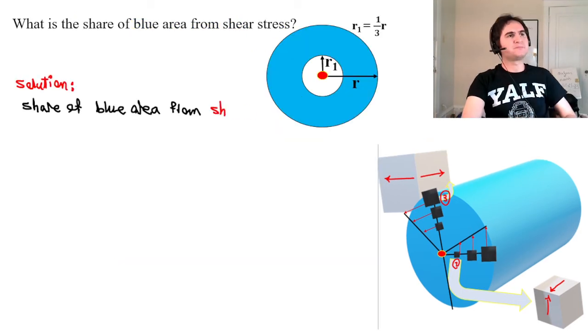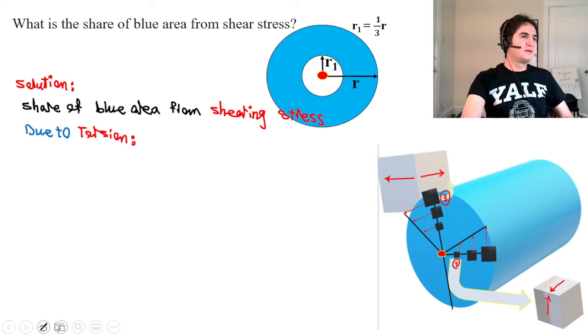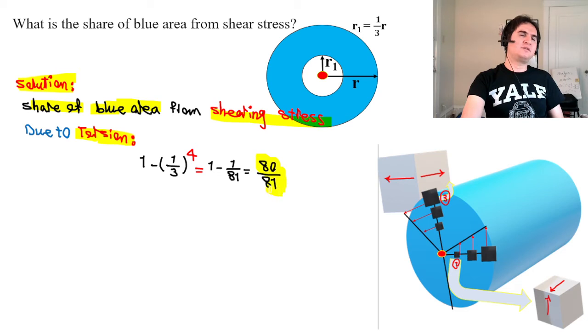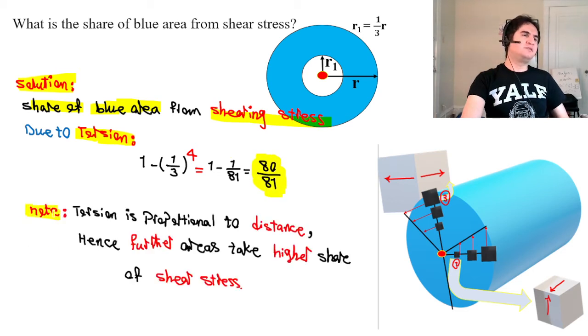Let's see how that goes. Share of shear stress from torsion is 80 over 81. And that's again a very vivid example of how torsion is proportional to distance.